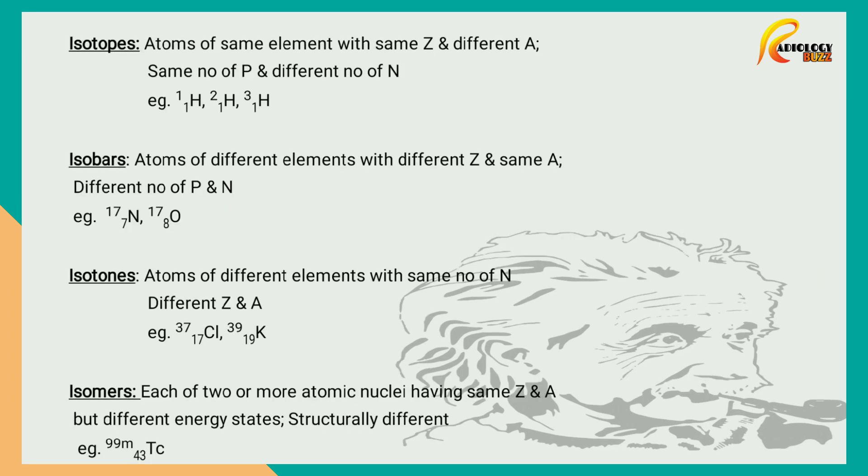Now we'll be looking at isotopes, isobars, isotones and isomers. Isotopes are the atoms of same element with same atomic number and different mass number. It has the same number of protons but different number of neutrons in its nucleus. For example, isotopes of hydrogen with 0, 1 and 2 neutrons respectively in their nucleus.